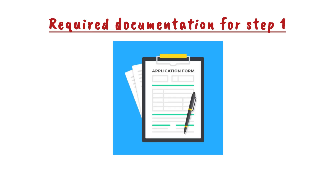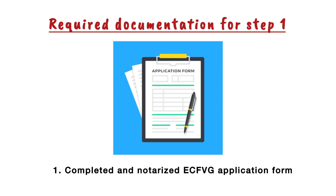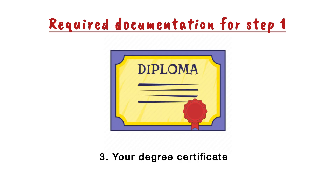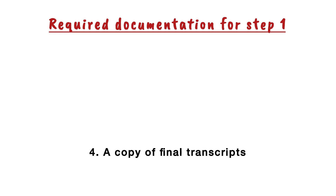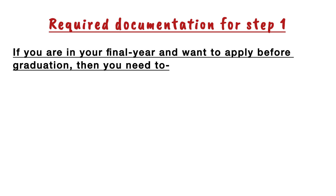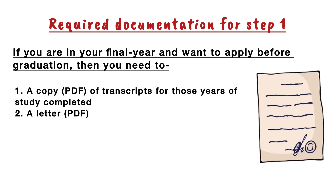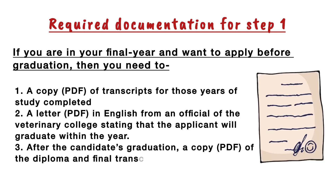To enroll in the program, first you need to complete the online application and pay the fee of $1,400. The required documents for Step 1 include: a completed ECFVG application form which has to be notarized, one recent photograph, your degree certificate, a copy of your final transcripts. If you want to apply before your graduation, you need to submit a copy of transcripts for years of study completed and a letter in English from an official of the veterinary college stating the applicant will graduate within that year. After graduation, a copy of the diploma and final transcript must be submitted to ECFVG within 10 days of your online application submission.